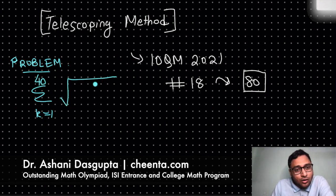The problem is: find the summation of k equals 1 to 40, square root of 1 plus 1 over k squared plus 1 over (k+1) squared.